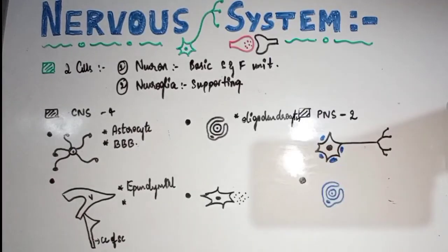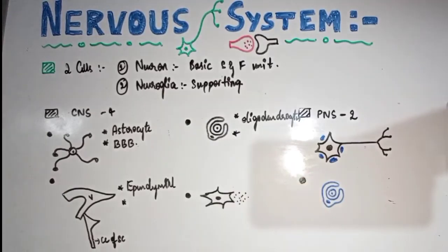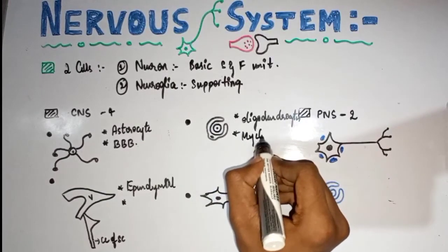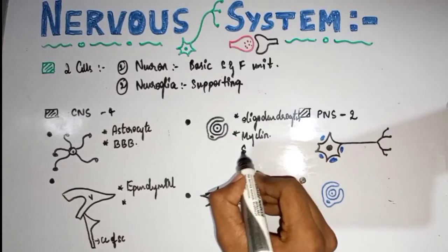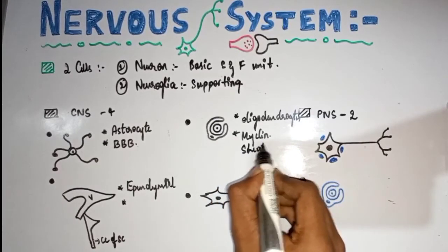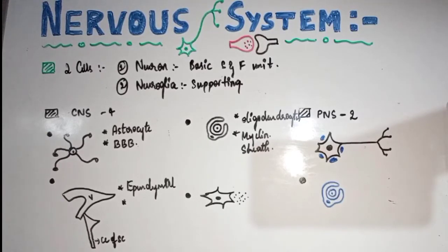The third type is oligodendrocytes. Oligo means fewer in number. Their function is the production of myelin sheath around axons in the CNS. This is similar to the role of Schwann cells, but oligodendrocytes are in the CNS while Schwann cells are in the PNS.